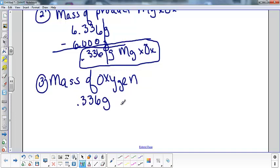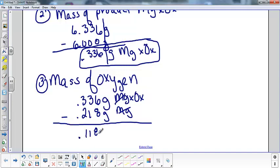We take our 0.336 grams of our product. We're going to subtract the grams of the magnesium, which was 0.218. Essentially, we're going to be left with oxygen. I know that's not really algebraically correct, but close enough. So we're going to end up with 0.118 grams of oxygen.